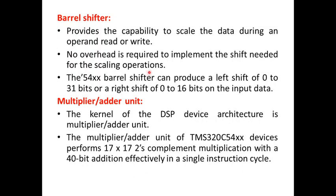The barrel shifter is a part of the CPU used to perform shifting operations. It provides the capability to scale data during an operand read or write, with no overhead required to implement the shift needed for scaling operations. This barrel shifter is capable of producing a left shift of 0 to 31 bits or a right shift of 0 to 16 bits on the input data.